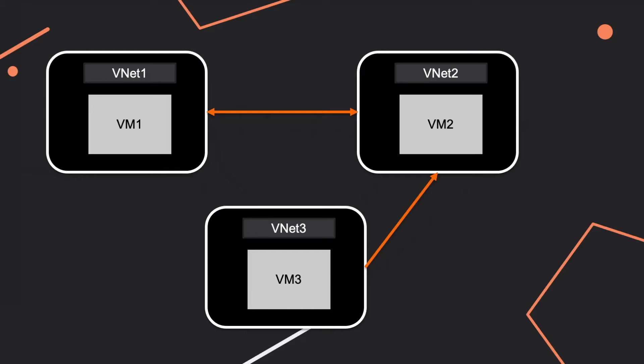I'd like to present a scenario that can be tricky - you can lose or gain points based on your answer, and there is one tricky thing you can expect. We have three virtual networks, one, two, three. Each of them has a virtual machine, and vnet one is paired with vnet two with a bi-directional peering connection.